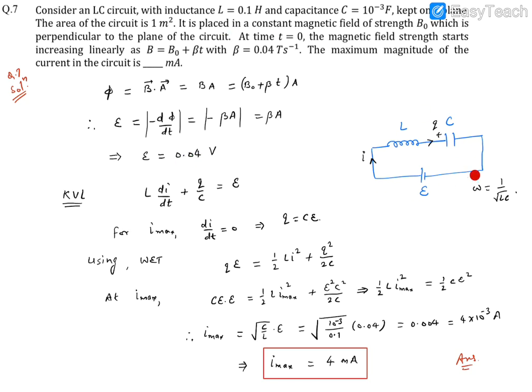Now if we draw the equivalent circuit, it will have an inductor, a capacitor, and a battery. So this will be an LC circuit with a battery.